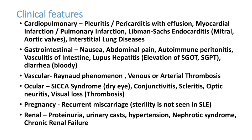SLE can involve internal organs — patients can have heart disease, lung disease, liver disease, and kidney disease. They can develop pleuritis, pericarditis, myocardial infarction, pulmonary embolism, endocarditis, abdominal pain, ischemic gastritis, lupus hepatitis, and Raynaud's phenomenon with obstruction to peripheral vasculature. Dry eye, dry mouth, recurrent thrombosis, visual loss, and recurrent pregnancy loss are also seen.